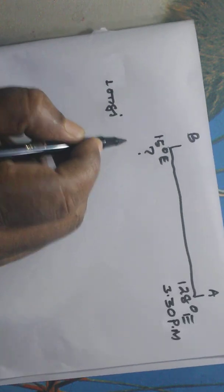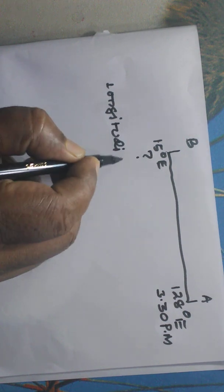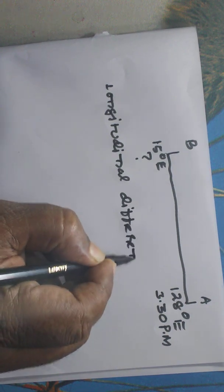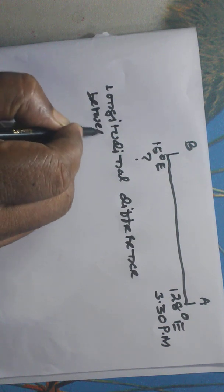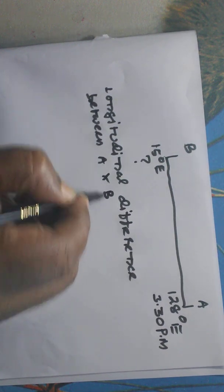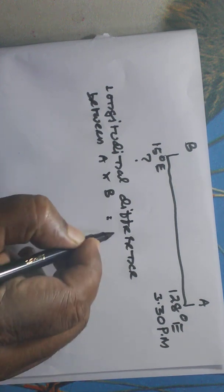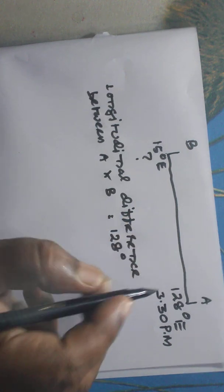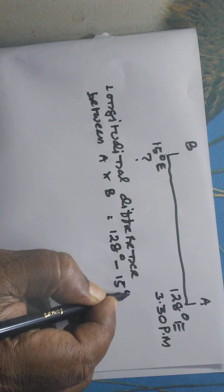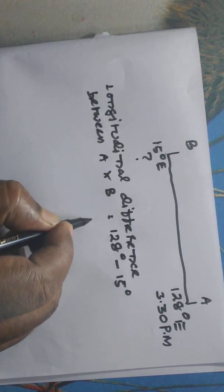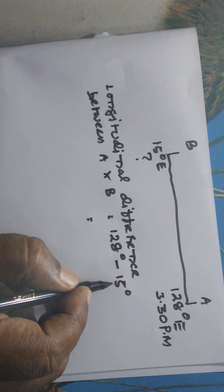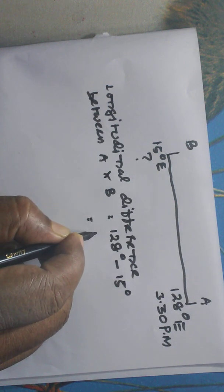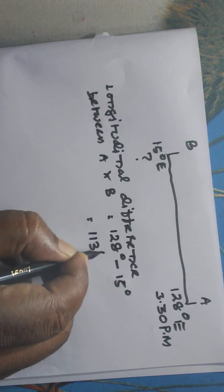Here also the first thing we write is the longitudinal difference between A and B. Since they are located in the same hemisphere we have to subtract: 128 minus 15 degrees, which comes to 113 degrees.